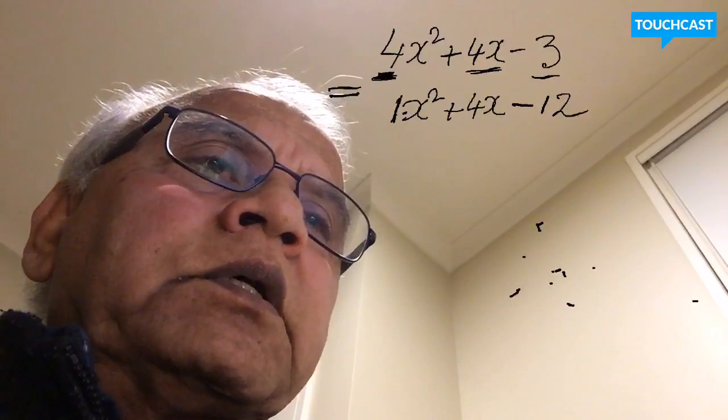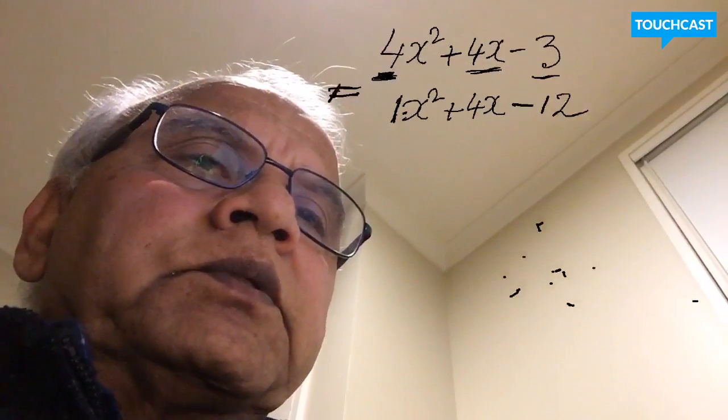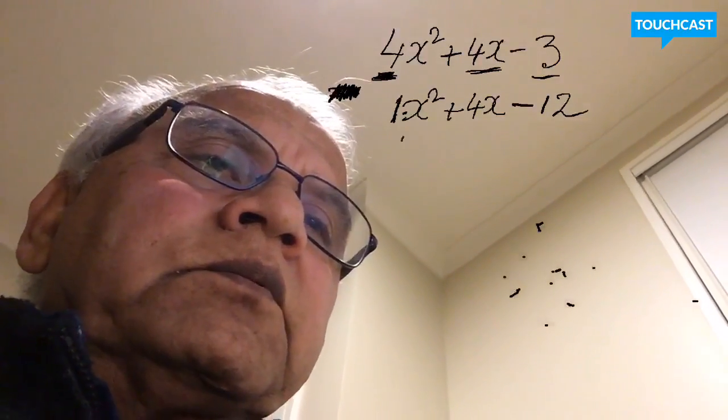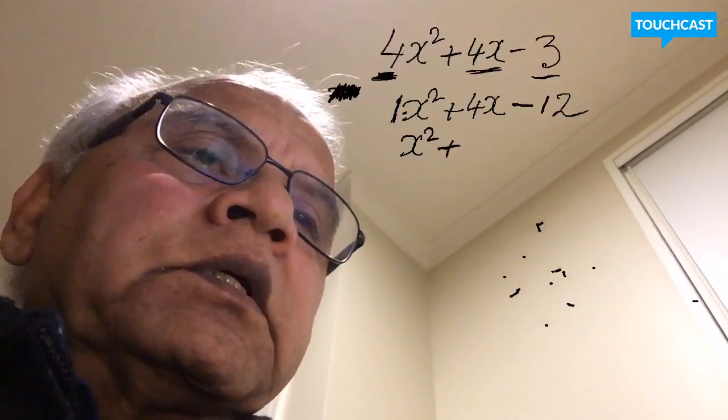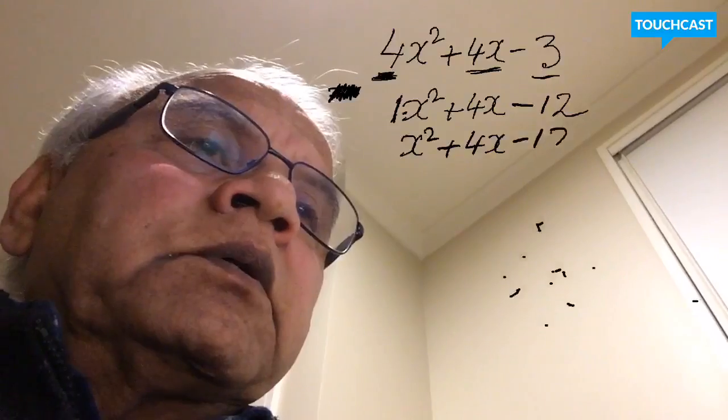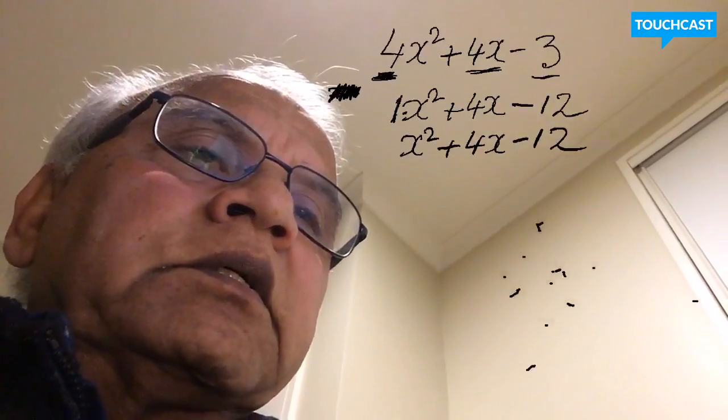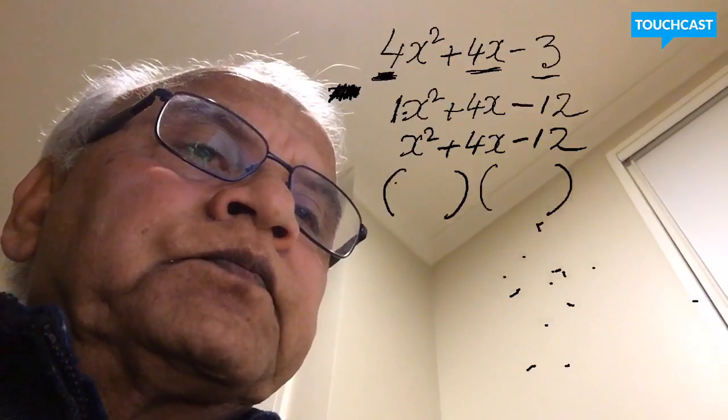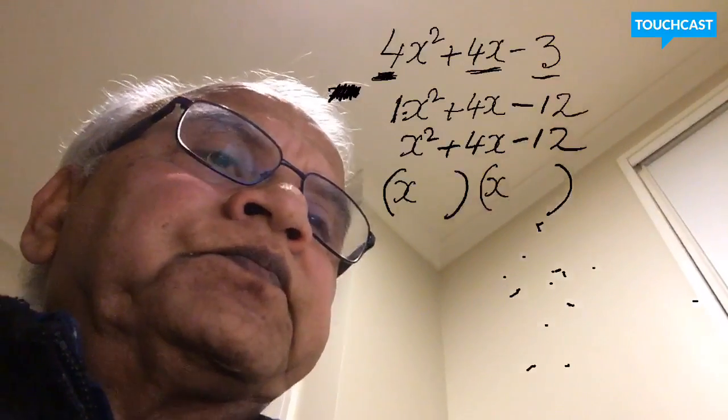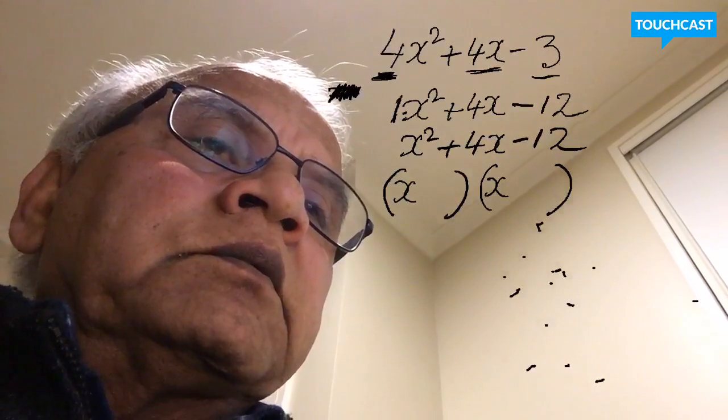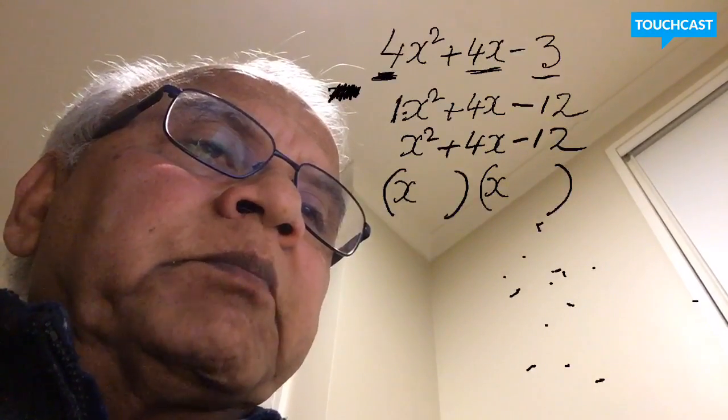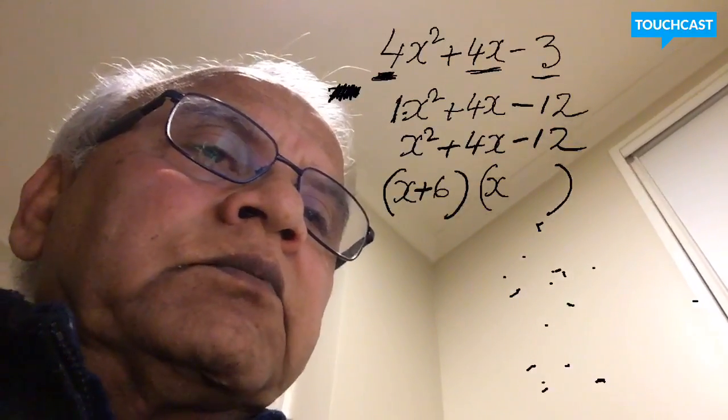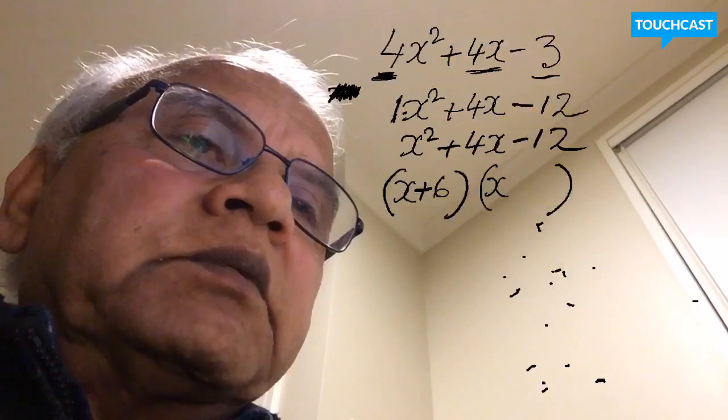Now, to students this is a simple quadratic where they place two brackets, write the x terms, and by now everyone knows it's going to be positive 6. Why positive 6? Because that middle term is positive.